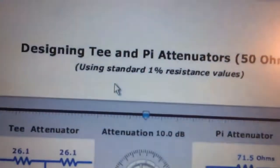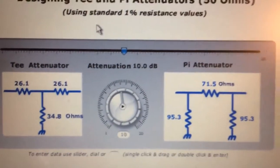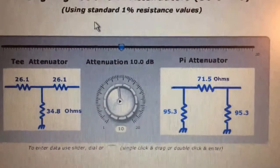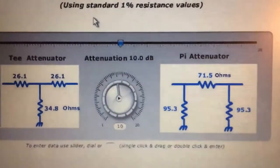Actually, the attenuation on this, if you calculate it and carry out the zeros, it's about 10.4 dB. But we're going to call it a 10 dB attenuator. So this is a nice tool. It has a slide, and it shows the decibel level, and then it shows the resistance values for both the T and pi configuration.